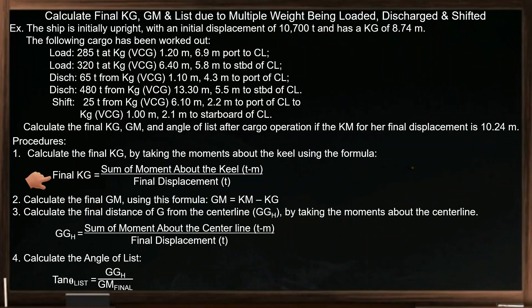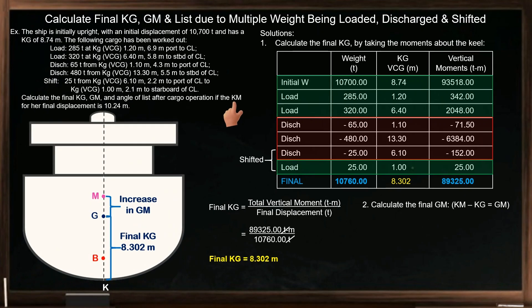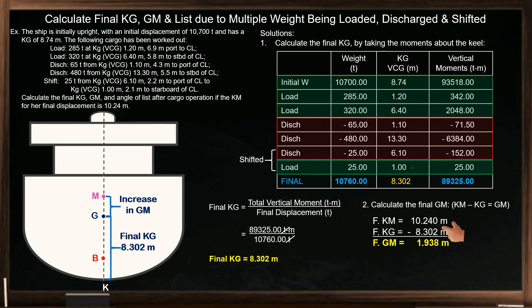We have already calculated the final KG; we can now proceed to procedure 2: calculate the final GM. The KM to be used is the KM for the final displacement, which is 10.24 meters. We can find KM values in the ship's hydrostatic table. So final KM minus final KG gives a final GM of 1.938 meters.